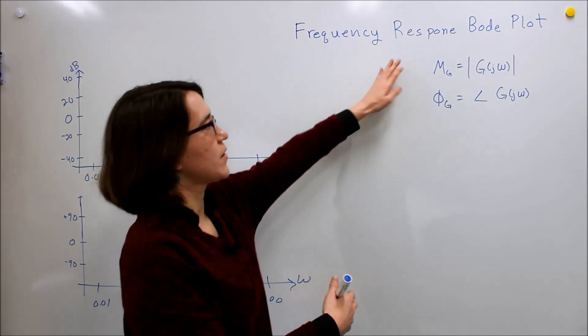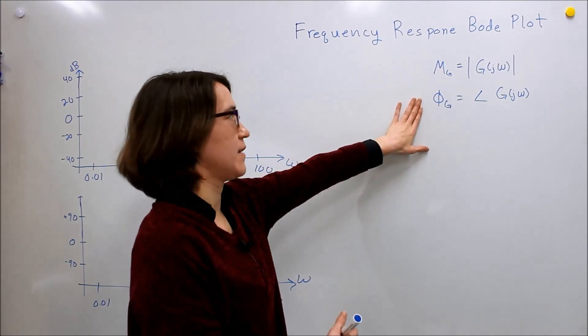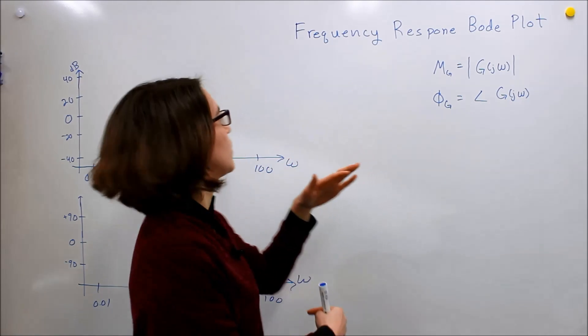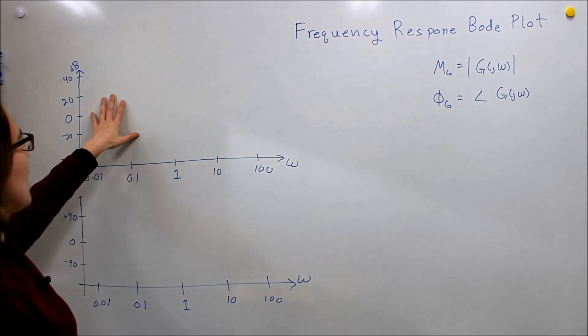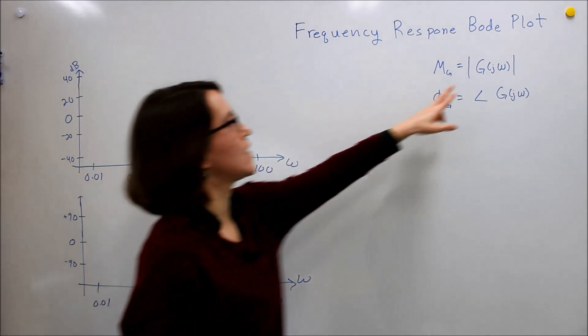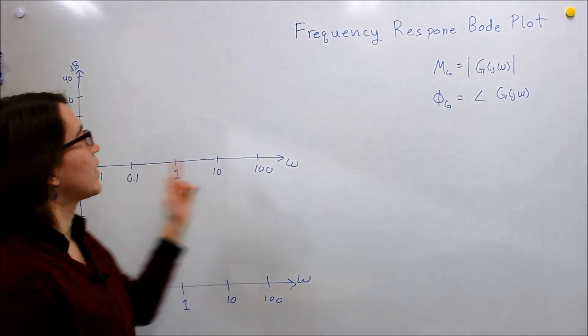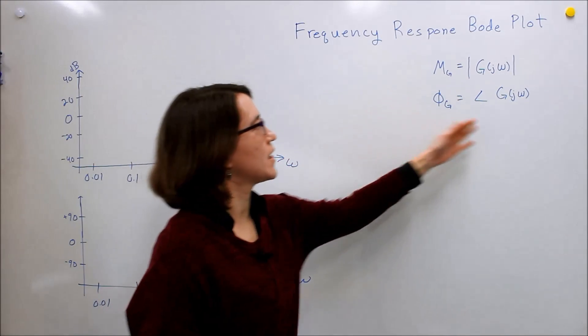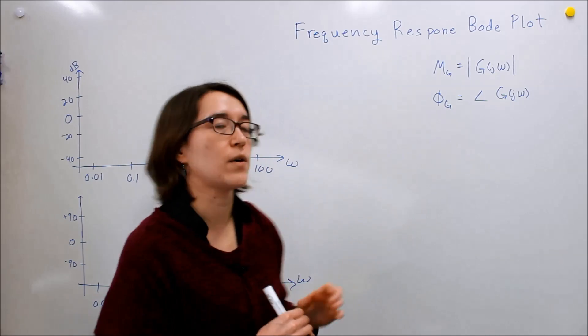We want to plot the magnitude and phase separately. We'll look at just the magnitude and plot it as the frequency changes. As we change omega, how does the magnitude change? And as we change omega, how does the angle change?